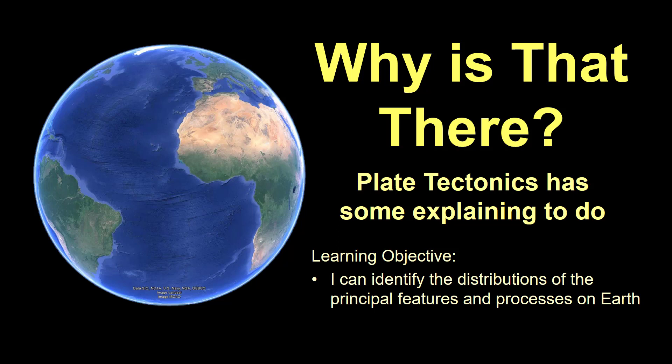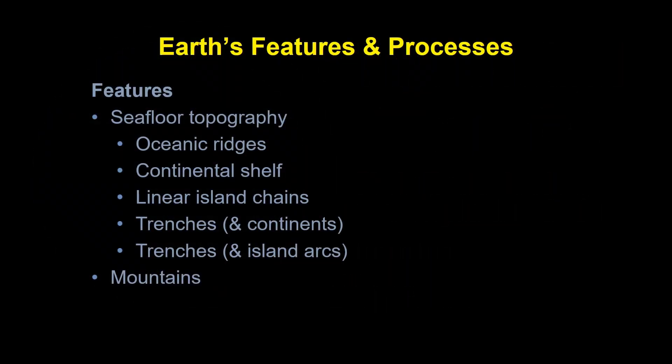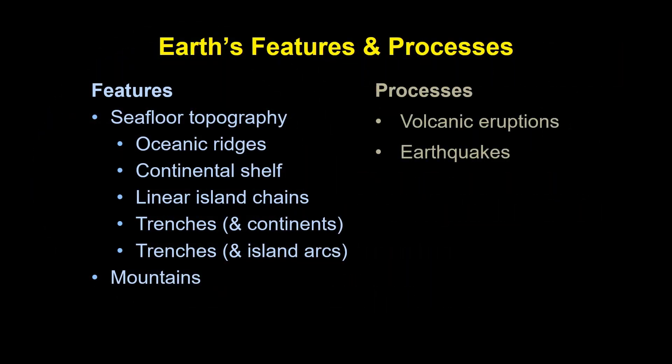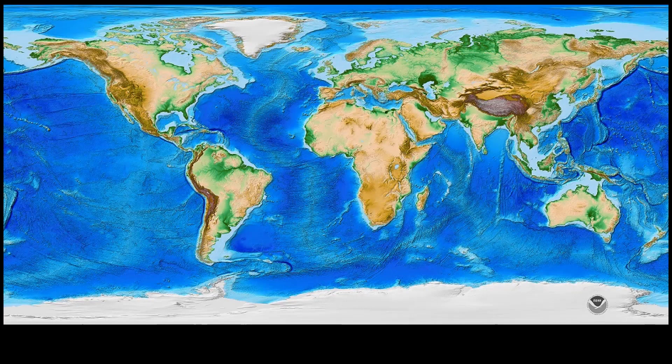This video examines the major features of Earth's surface relative to the distribution of important Earth processes. Any conceptual model of how Earth works, like plate tectonics, must be able to explain these patterns. When we refer to features, we are mostly focusing on the physical characteristics of the ocean floor and mountain ranges on the continents. Processes, in this case, involve earthquakes and volcanic eruption.